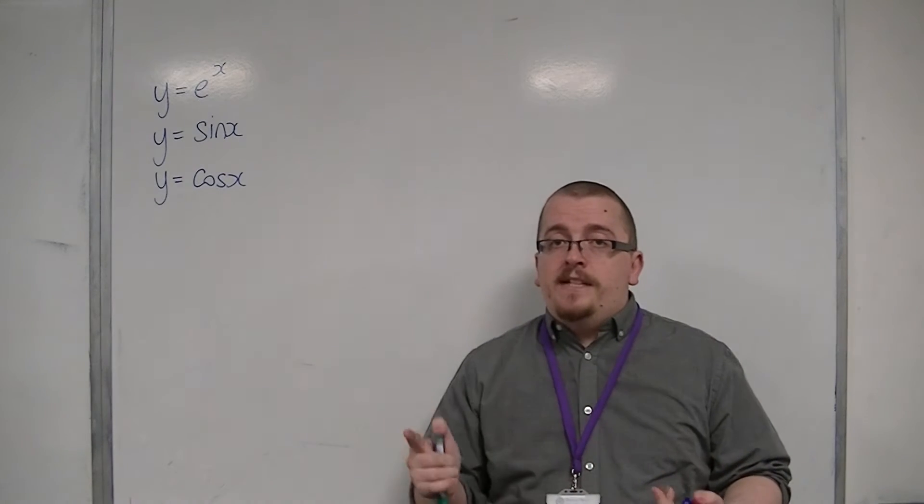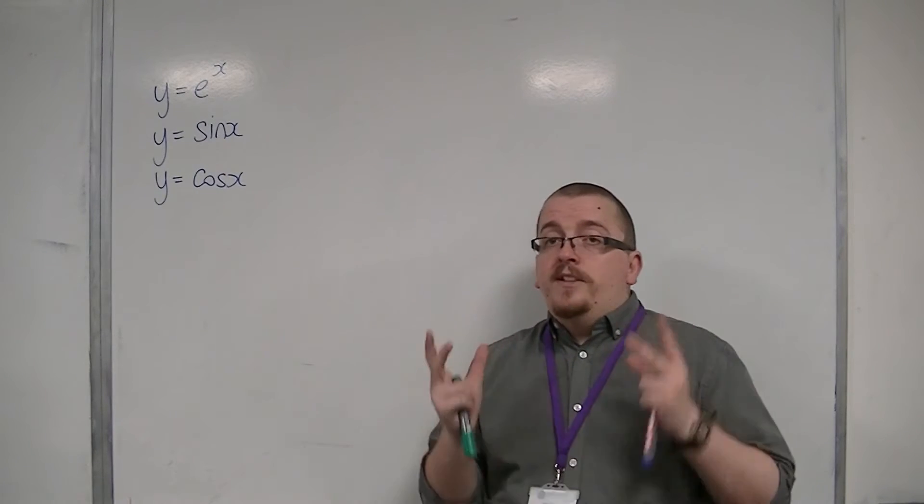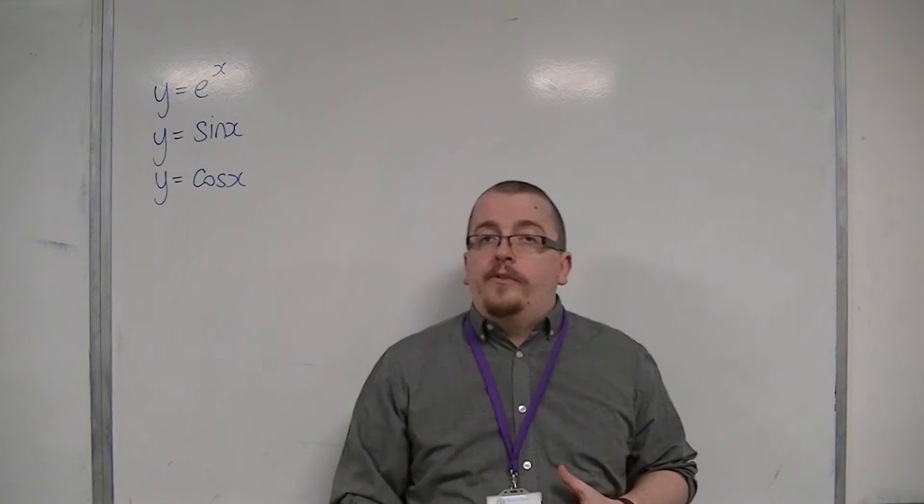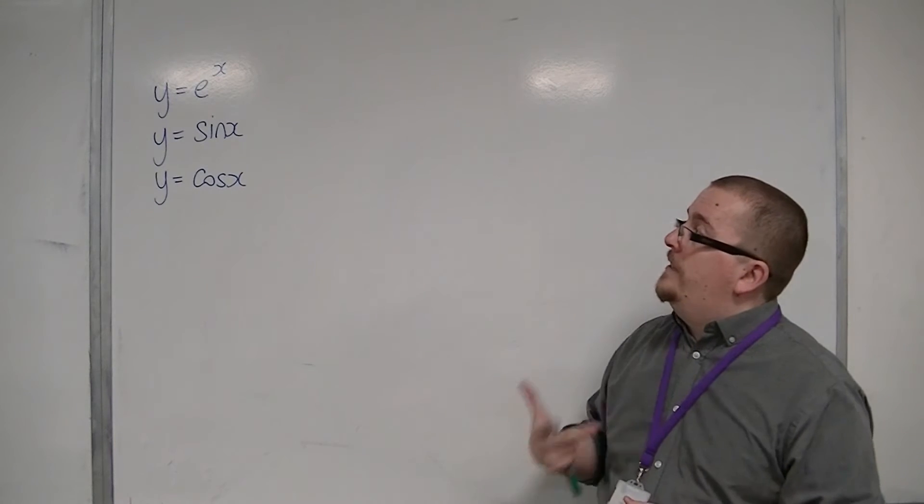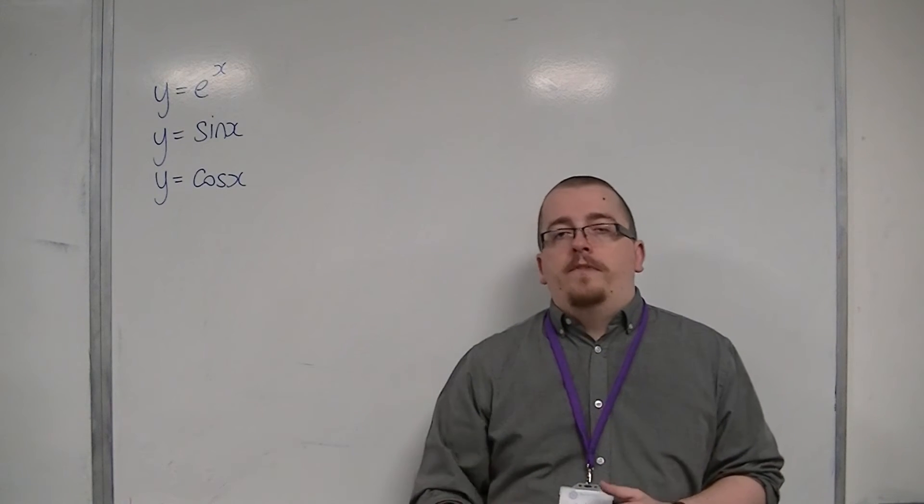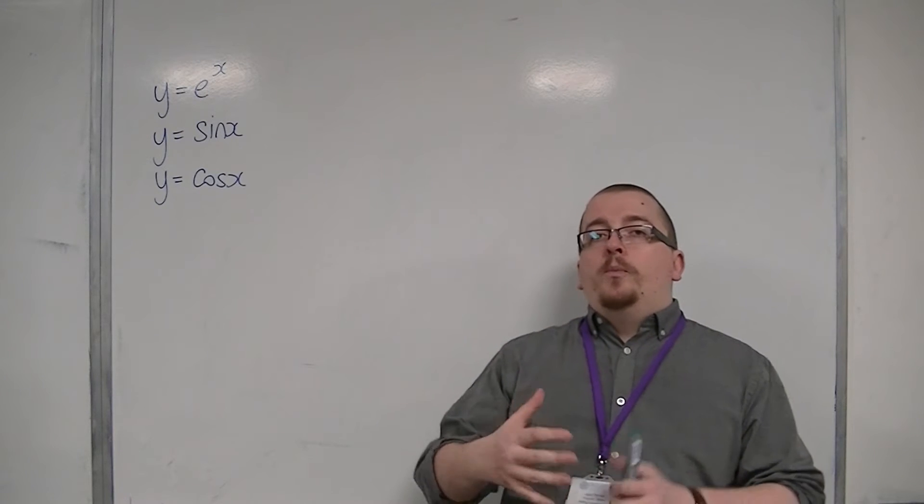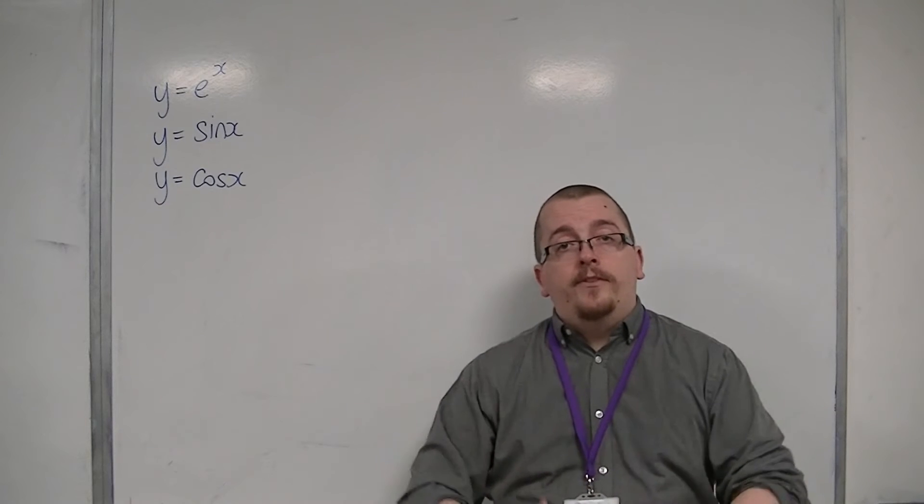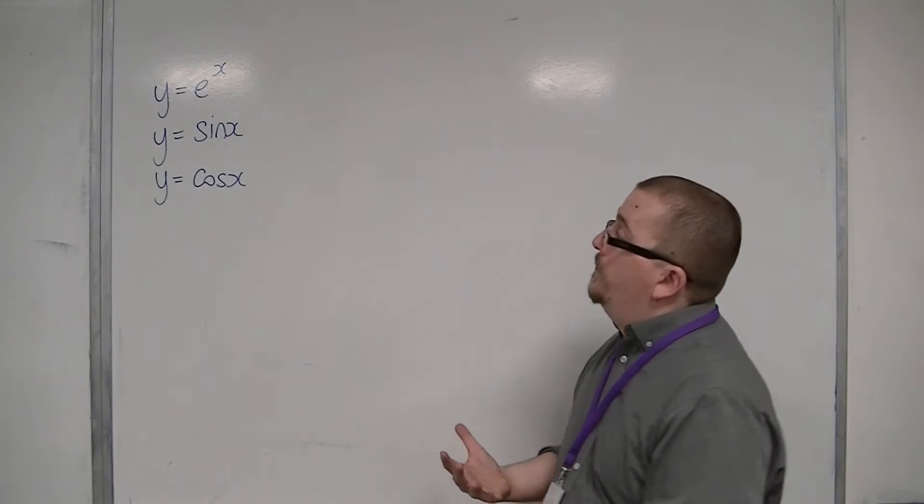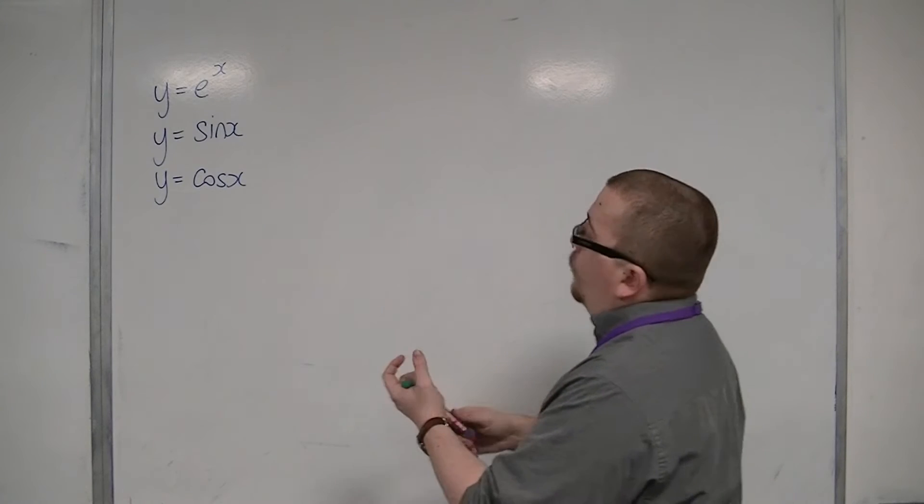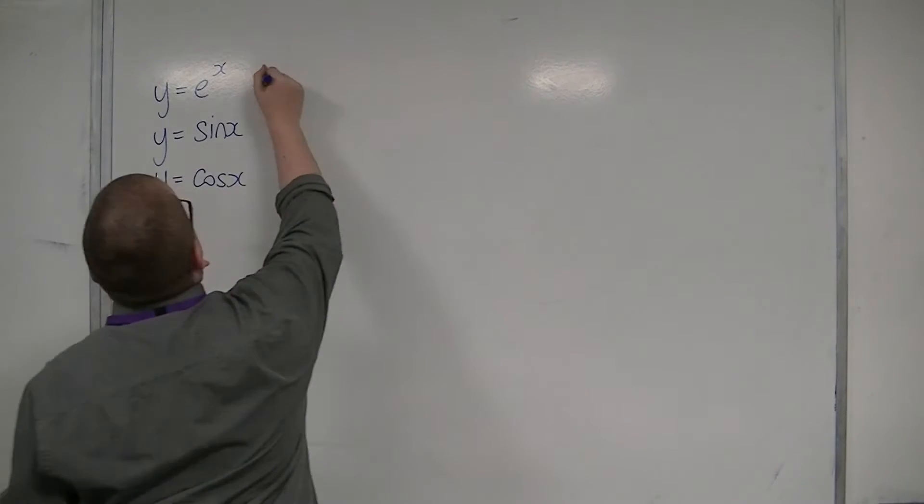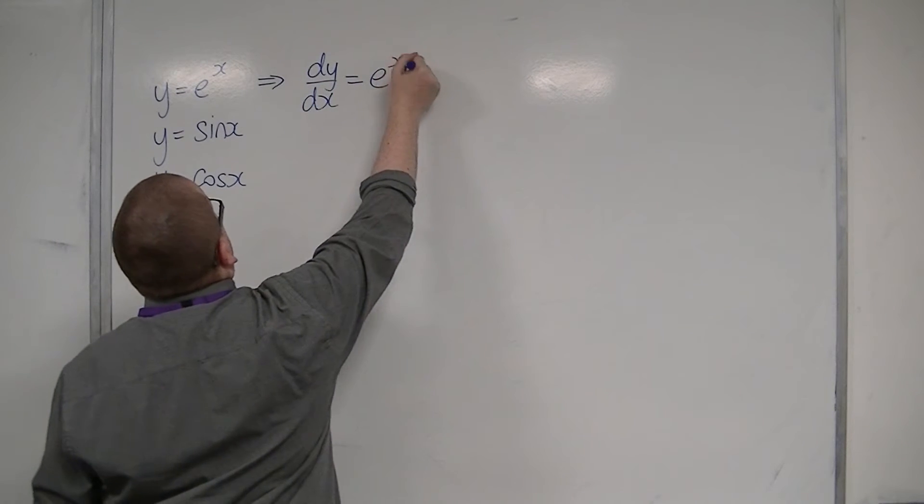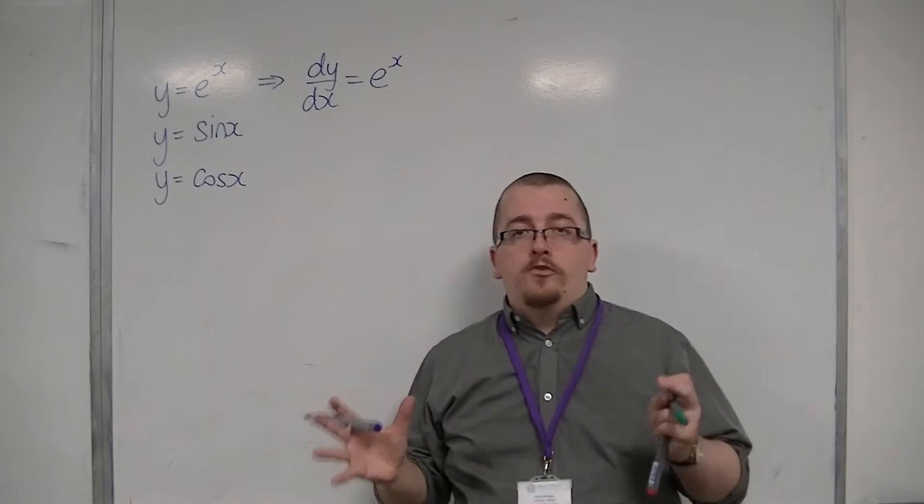We're going to start with y equals e^x. We've already discussed in a previous video, when we first introduced the exponential function e^x, what its derivative is. We defined e^x as the function that differentiates to itself. So the derivative of y equals e^x is just e^x. It's very straightforward to remember.